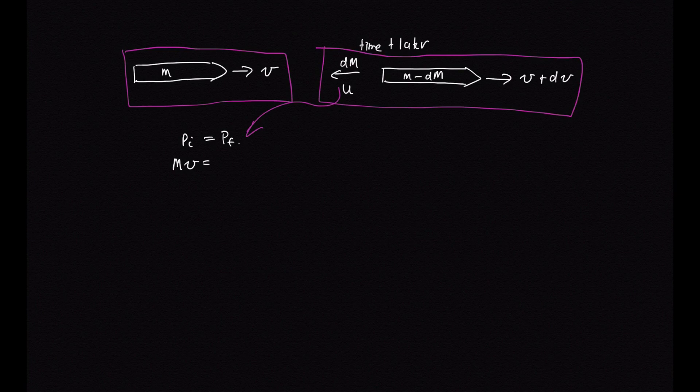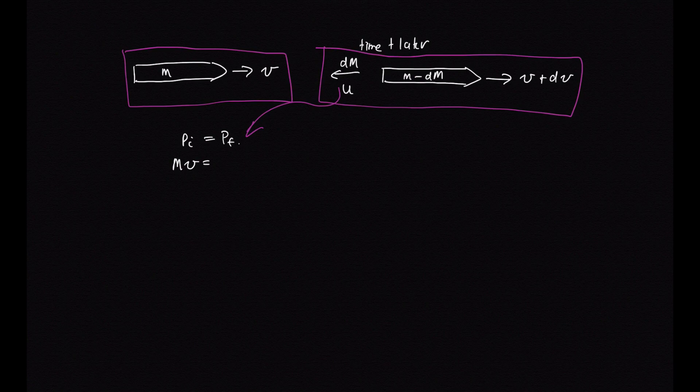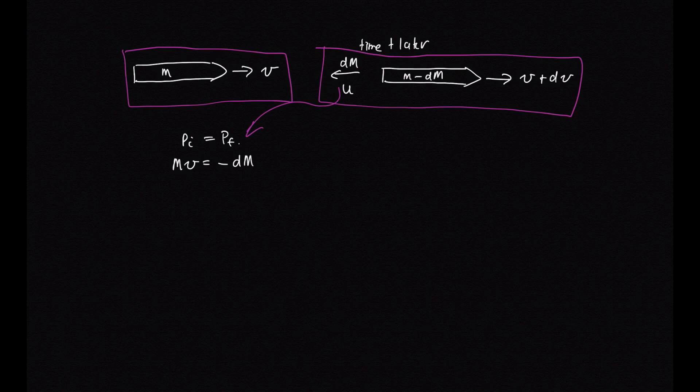So we can write mv is equal to, now we've got the fuel. The fuel is going in the opposite direction, so the negative direction.